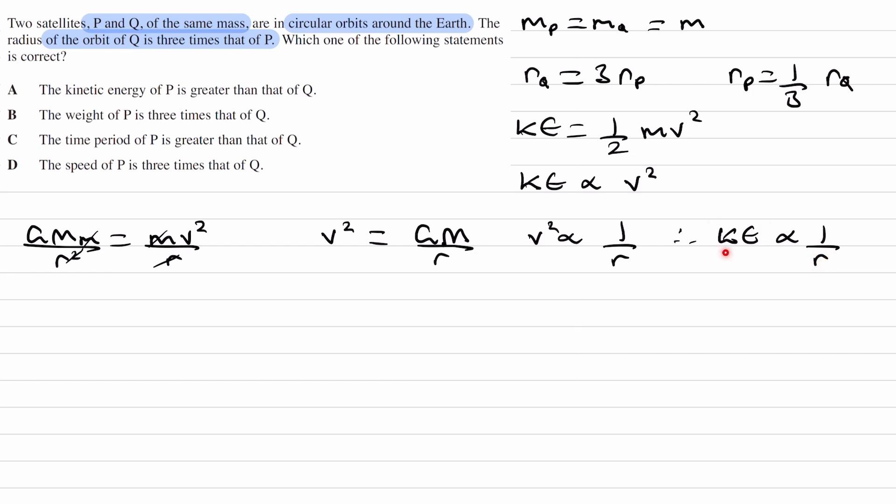Because 1 over a smaller number will give you a larger number. So P will then have a greater kinetic energy than Q, so the answer is A.